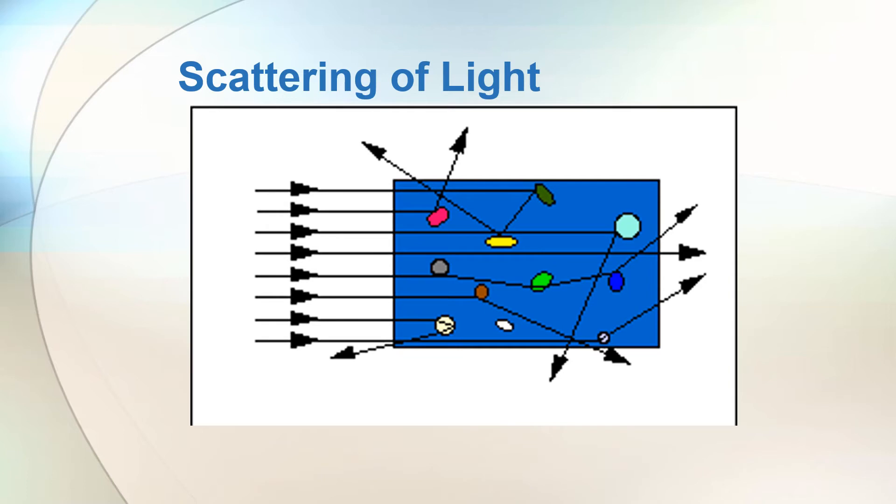Scattering of light takes place in the sky. Generally, small particles scatter blue, medium-sized particles scatter green, and large particles scatter red.